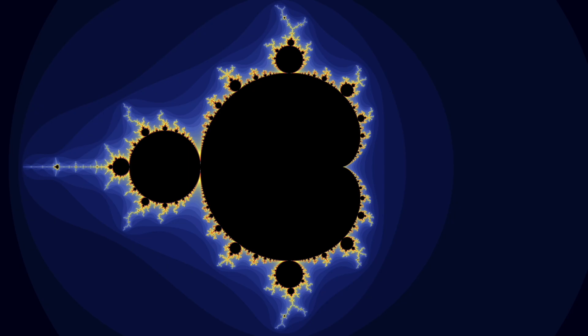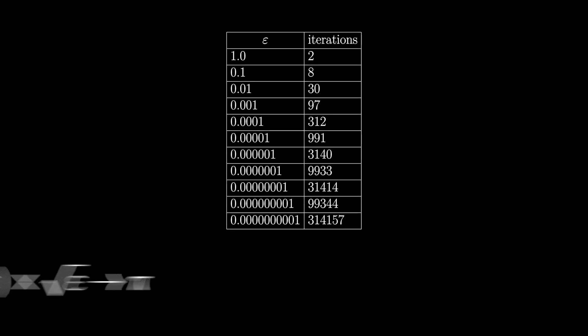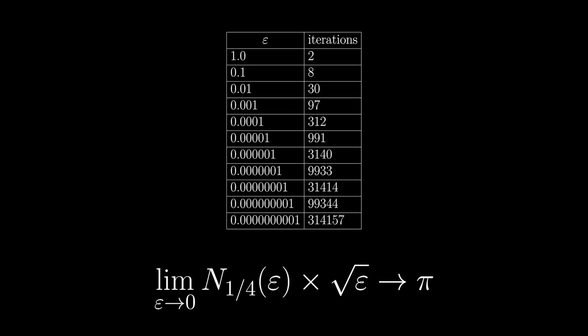And it turns out, we can find a similar result at 1 quarter, which lies at the butt of the Mandelbrot set. If we take the real number 1 quarter plus epsilon just to the right of this point, it will always diverge. In this case, it turns out the number of steps to diverge times the square root of epsilon equals pi.